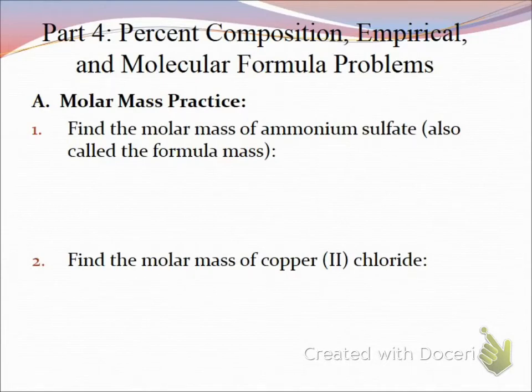First thing we have to be able to do is write the formulas of the things that we need to find the molar mass for. If I want to find the molar mass of ammonium sulfate, how would I write that formula? Ammonium is NH4+, so I put parentheses around those. And then sulfate is SO4. So that would be my formula: (NH4)2SO4.